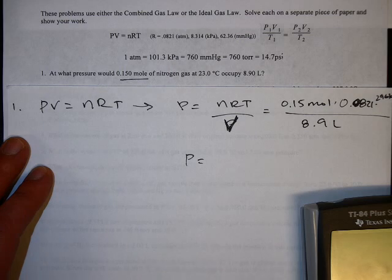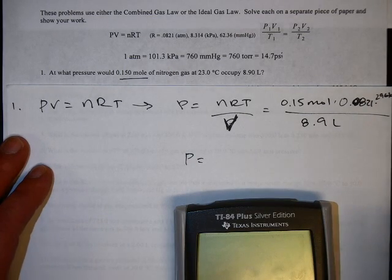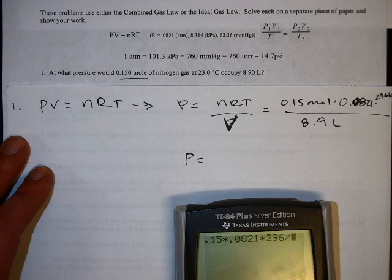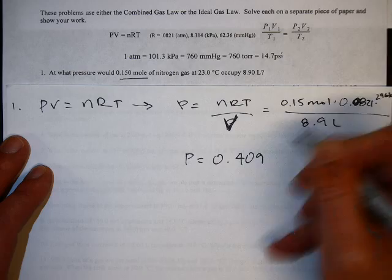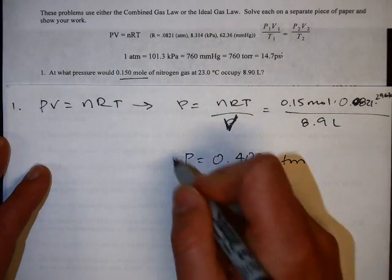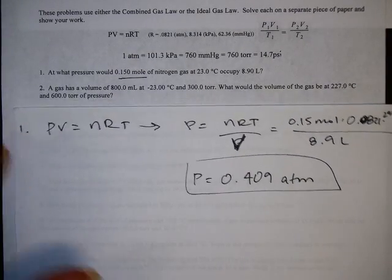Then it just spits out pressure for you. This pressure is going to be in atmospheres, but you can also have pressure in kPa or millimeters of mercury depending on which R you picked. For me, this is 0.15 times 0.0821 times 296 divided by 8.9, and I get 0.409 atmospheres. You can have a different one, but it'll be equal to 0.409 atmospheres.